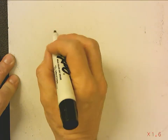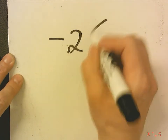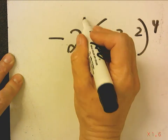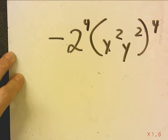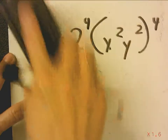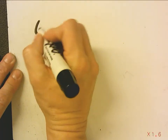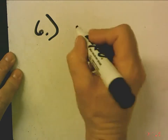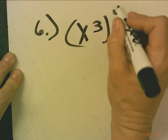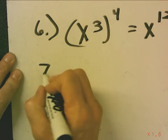Now let's go back to the example. Had it been negative 2 times x squared, y squared to the fourth — or negative 2 to the fourth — this term would stay negative. It's only when the negative is inside the parentheses that it becomes positive. Number 6 is x cubed to the fourth, and that's x to the twelfth. Power over power, you multiply.